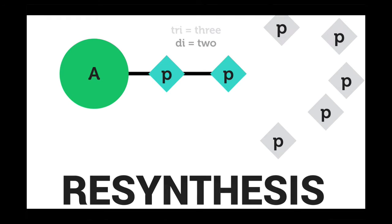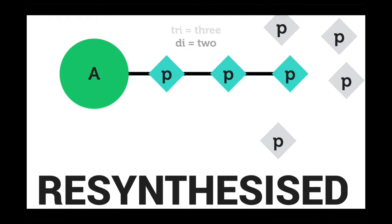Even though our body has a certain amount of ATP to use, it doesn't mean once it's used that's it. ADP will rebuild to become ATP again. The rebuilding of the ADP molecule back to ATP is called resynthesis. This occurs when a free phosphate rejoins ADP, reinstating the bonds and making it ATP again, therefore able to release energy to the muscles once again.